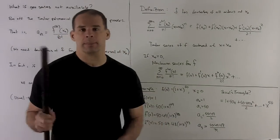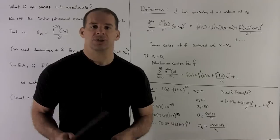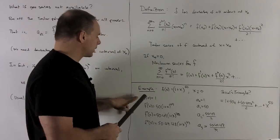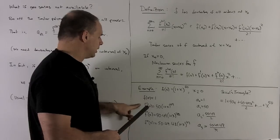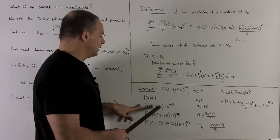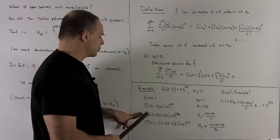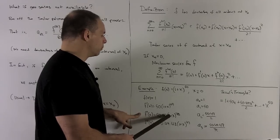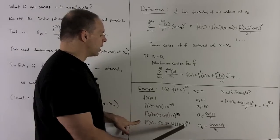If I go with x equals zero, it'll be a McLaren series. So let's take a look. f of zero is going to be equal to 1. If I take the derivative, I'm going to get 50 times 1 plus x to the 49th power. Second derivative, 50 times 49, 1 plus x to the 48th, and so on.